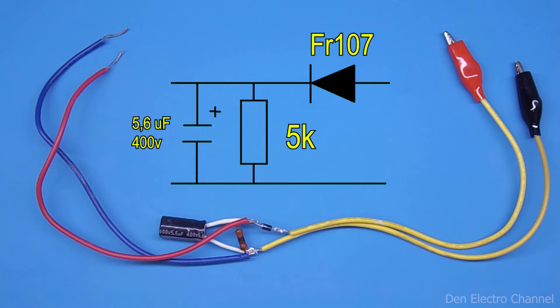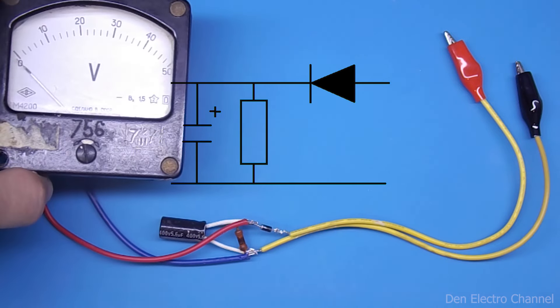An alternating voltage is supplied on the right, and a voltmeter is connected to the direct current on the left.